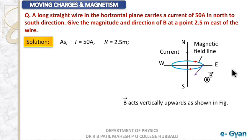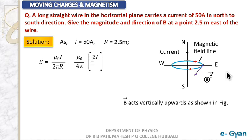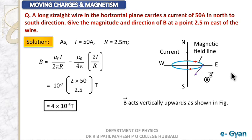We have already found the direction. Now let us find the magnitude using B = μ₀I / 2πr, rewritten as μ₀/4π multiplied by 2I/r. Substituting μ₀/4π = 10⁻⁷, and 2 × 50 divided by r = 2.5, simplifying gives the magnetic field at 2.5 meters east of the wire as 4 × 10⁻⁶ tesla.